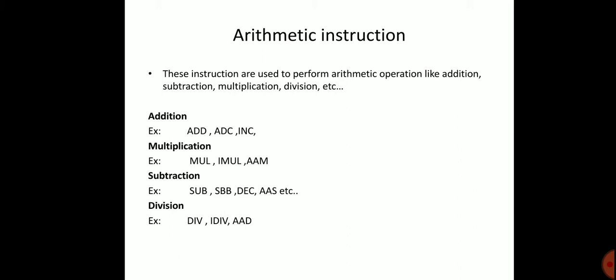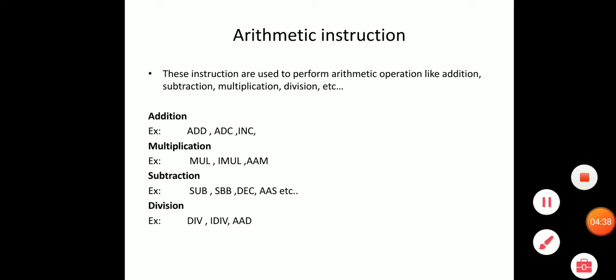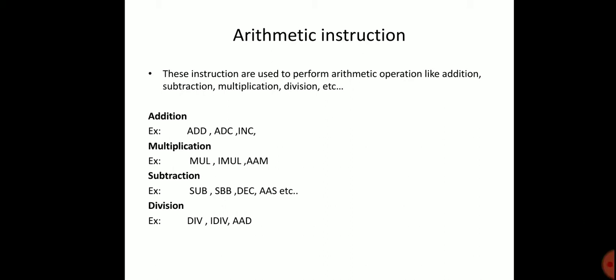For multiplication, the instruction is MUL. For subtraction, the instructions are SUB (subtract), SBB (subtract with borrow), DEC (decrement), and ASCII adjust for subtraction. For division, the instruction is DIV, along with ASCII adjust for division. These arithmetic operations — addition, subtraction, multiplication, and division — form the Arithmetic Instruction Set of the 8086.